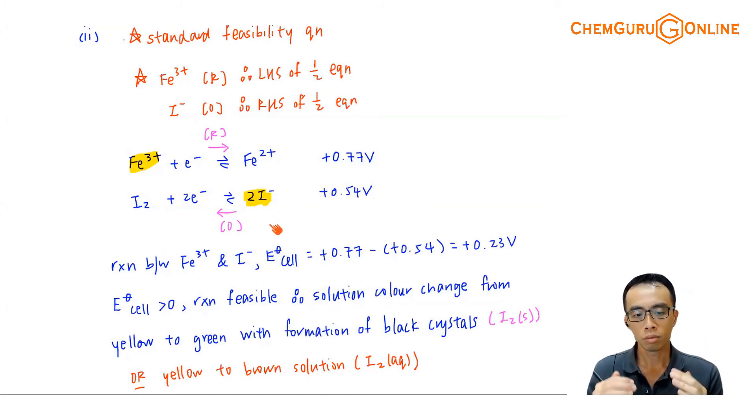And this half equation, once I've chosen, what we have to keep in mind is when you calculate the E cell, the redox reaction has already been fixed. We have already determined who is reduced, iron 3 plus. We have already determined who is oxidized, I minus. Because the question gives me that iron 3 plus is present and I minus is present. We don't choose,